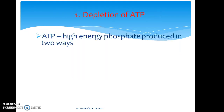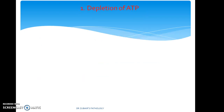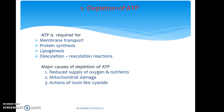Starting with depletion of ATP. ATP is a high-energy phosphate produced in two ways: oxidative phosphorylation of ADP (adenosine diphosphate), and by the glycolytic pathway. ATP is required for membrane transport, protein synthesis, lipogenesis, and deacylation-reacylation reactions. The major causes of ATP depletion are reduced supply of oxygen and nutrients, mitochondrial damage, and action of toxins like cyanide.